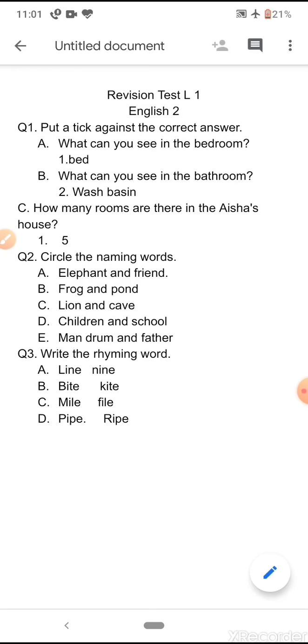Look at the next one. How many rooms are there in Aisha's house? The answer is five. Now come to the next question: circle the naming words.